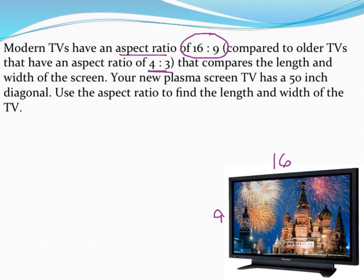So our new plasma screen TV has a 50-inch diagonal. That's how televisions are measured along their diagonal. And we're going to use this aspect ratio to find the length and width of our television.